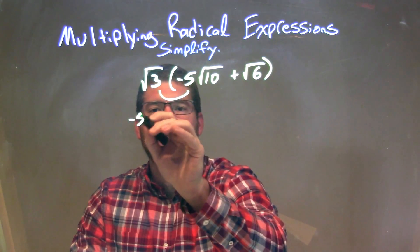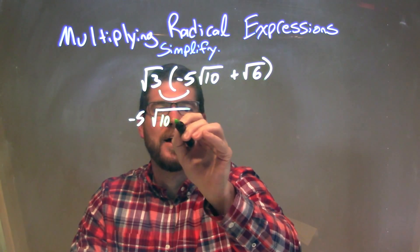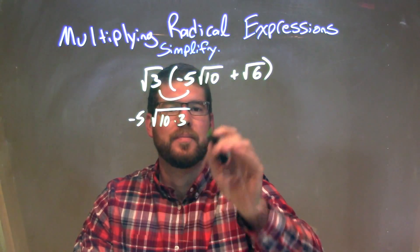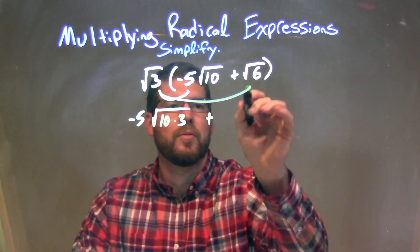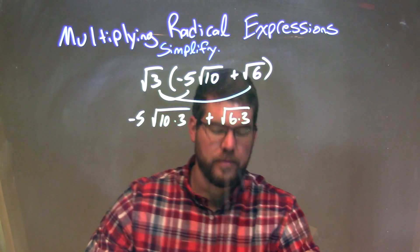The negative 5 stays on the outside, and the square root of 10, we can break that into 10 times 3. I do the same thing, bring the square root of 3 across here, and so I have the square root of 6 times 3.